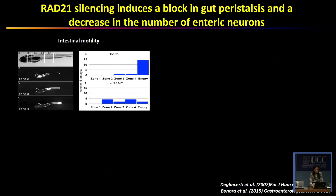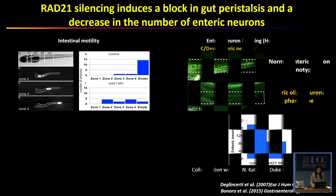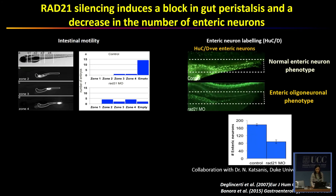We analyzed this mutation in vivo using a zebrafish model. As you can see from the first panel, we analyzed intestinal motility using the micro-gavage technique. In the first graph, we showed that in the zebrafish control there is a complete emptying of the gut, but when we analyzed the RAD21 morpholino, there is a complete delay in the full transit. Furthermore, we also analyzed HuC/D marker for the enteric neurons, and as you can see from the picture, there is a reduction in the number of HuC/D-positive cells in the RAD21 morpholino compared to the control.